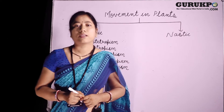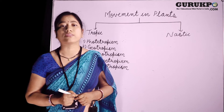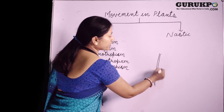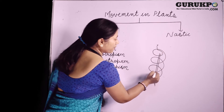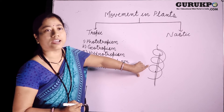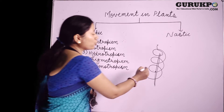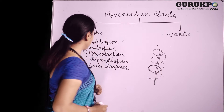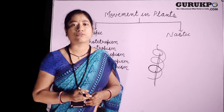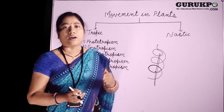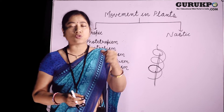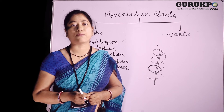Now next is thigmotropism. Thigmotropism is the movement of a plant part in response to touch. The best example of thigmotropism is the money plant. When the stem of the money plant touches a stick, the portion in contact with the stick contains less auxin and shows less growth, while the other portion shows more growth. Due to this differential growth, the stem bends over and wraps around the stick. Now next is chemotropism. Chemotropism is the movement of a plant in response to a chemical. The example of chemotropism is the movement of the pollen tube towards the ovary. During the process of fertilization, the pollen tube moves towards the ovary due to a sugary substance secreted by the ovule.